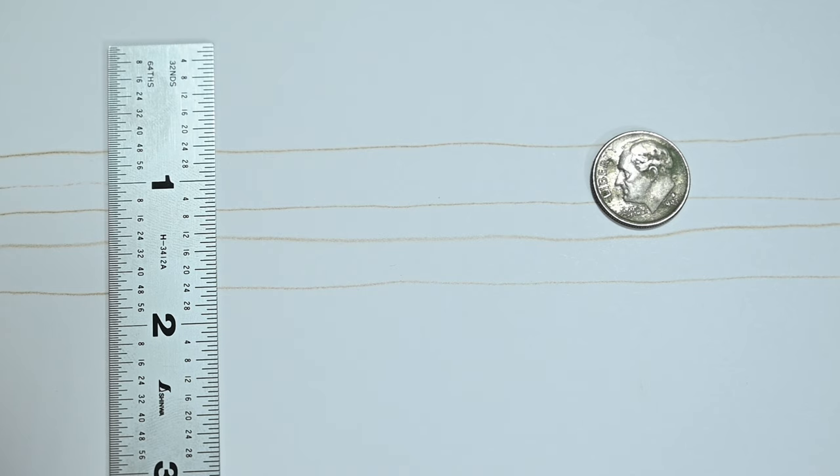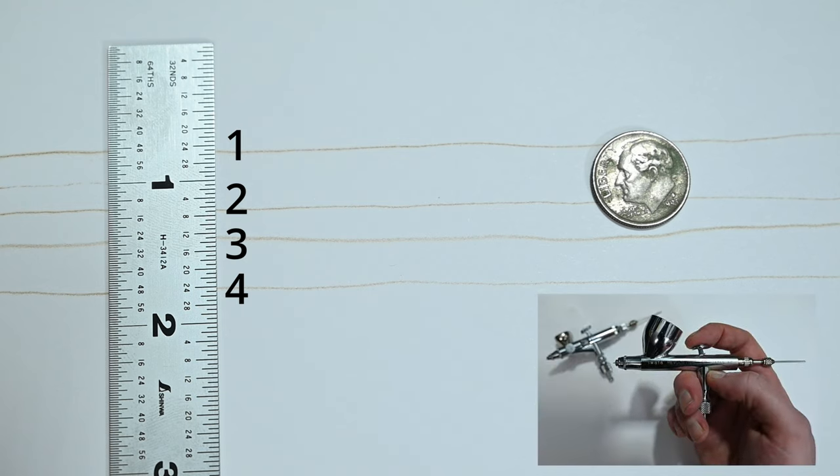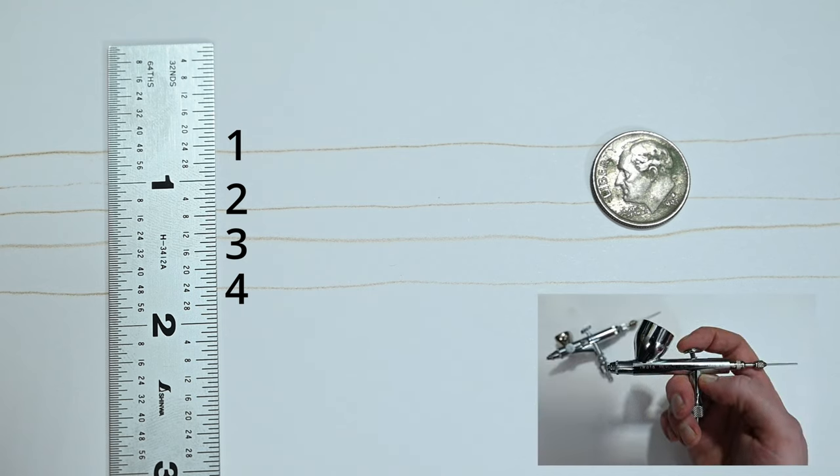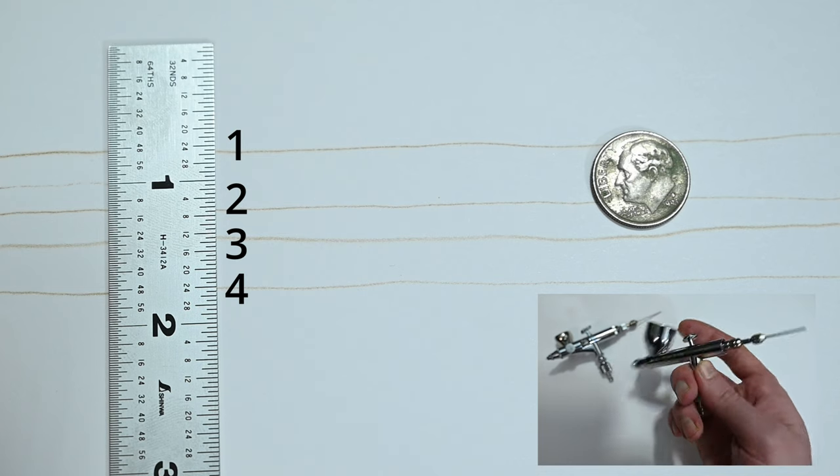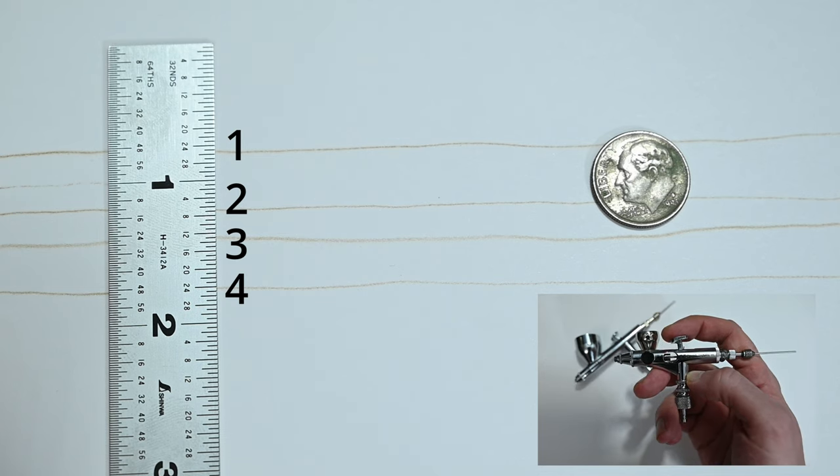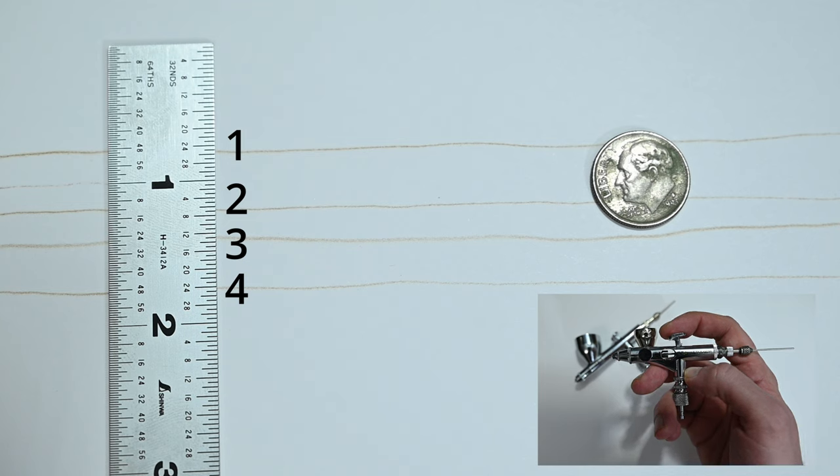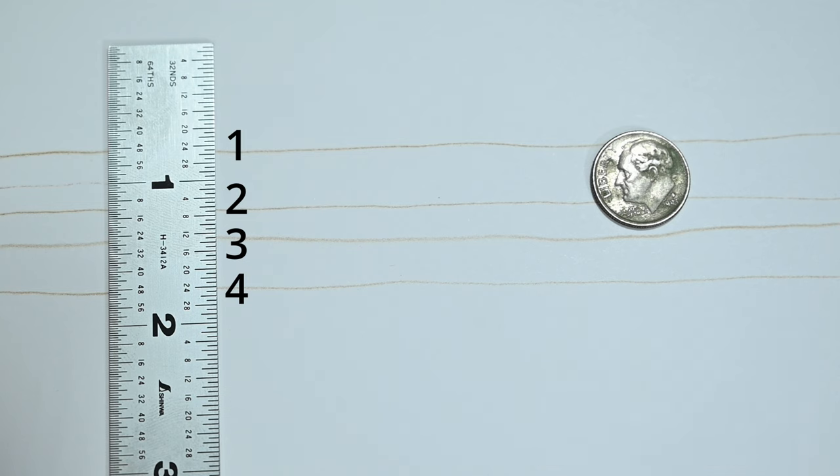So take a look at this piece of paper here. These are the thinnest lines I was able to paint. Two of these were painted with the Iwata Revolution, which, remember, has a needle size of 0.5. And the other two were painted with my Iwata Custom Micron Takumi. The Micron is four times the price and has a needle and nozzle size more than half that of the Revolution at 0.18 millimeters. Let me know if you're able to tell which lines were painted with the Revolution and which lines were painted with the Micron. Because, to me, looking at this now, I can't tell the difference. Lines one and two were painted with the Iwata Revolution, and lines three and four were painted with the Micron Takumi.